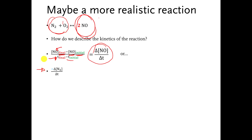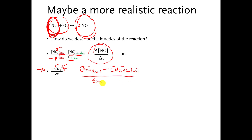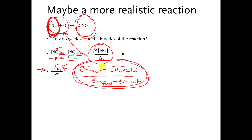To describe the speed of the reaction using how fast N2 is disappearing, we calculate delta concentration of N2: concentration of N2 final minus concentration of N2 initial, divided by time final minus time initial. This is another valid way of describing the speed of the chemical reaction — based on how fast the N2 concentration is dropping as N2 and O2 disappear and turn into NO.